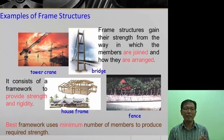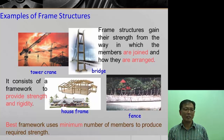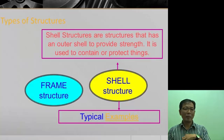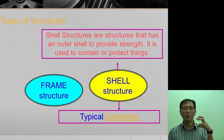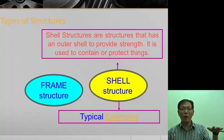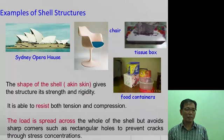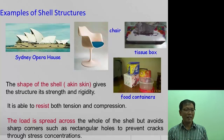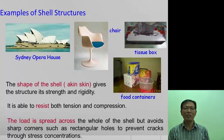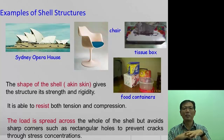Shell structures have an outer shell or skin that joins together using one piece to protect things. Examples include a chair, a tissue box, and the Sydney Opera House. The strength and load are spread across the whole body of the shell, rather than through just a few members.